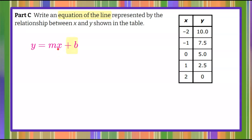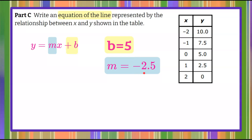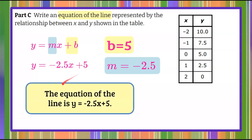So b, our y-intercept, we bring forward from Part A — b equals 5. And m, our slope, we determined in Part B that the slope was negative 2.5. So let's plug in: we replace m with negative 2.5 and b with positive 5. Bringing down our y, our m is negative 2.5 times x, and then we add 5. The equation of the line is y equals negative 2.5x plus 5.